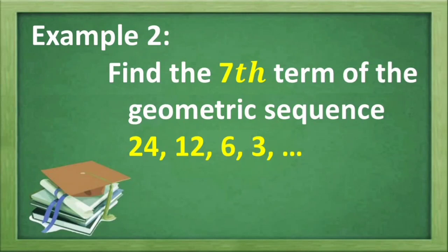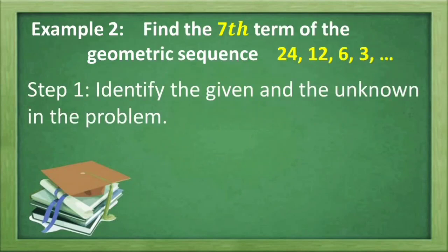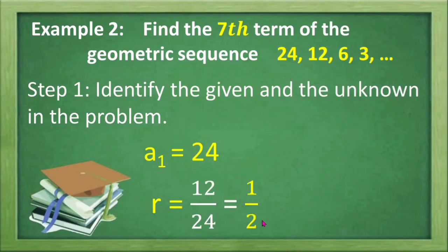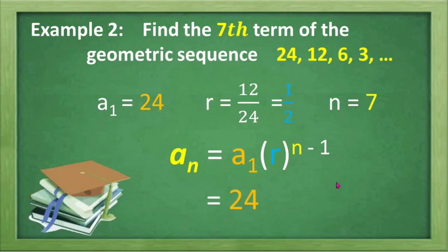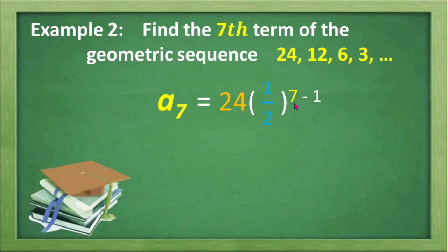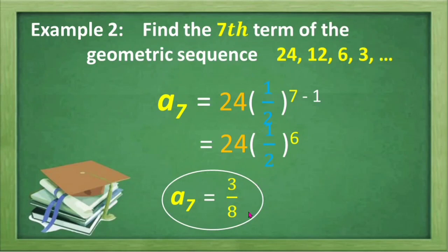Example 2: Find the seventh term of the geometric sequence 24, 12, 6, 3, and so on. Identify the given: first term equals 24, common ratio is 1 half (because we divide the second term by the first), and n is 7. We are asked to find A sub 7. Substituting into the formula: A sub 7 equals 24 times 1 half raised to 7 minus 1, which is 6. So 1 half raised to the 6th power multiplied by 24 equals 3 over 8. That is the seventh term.